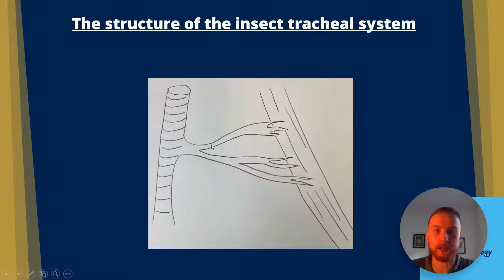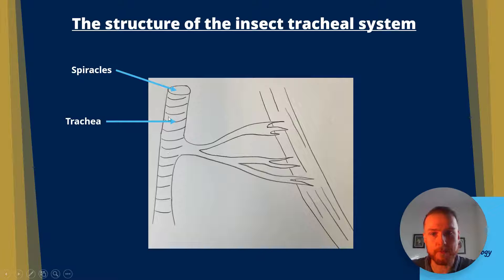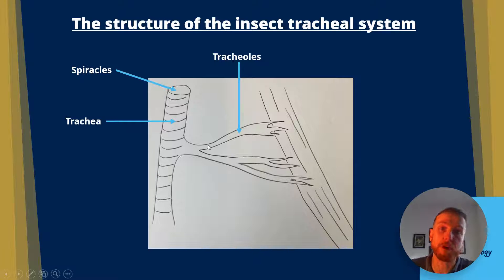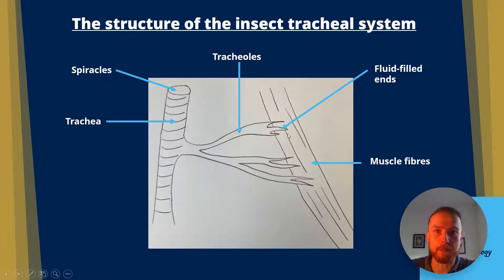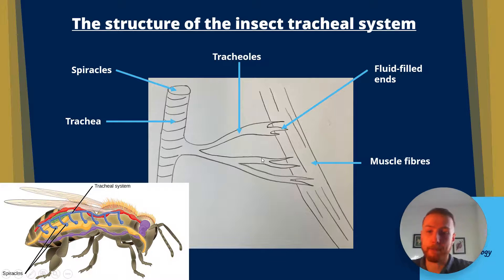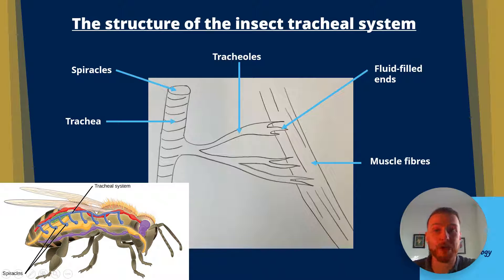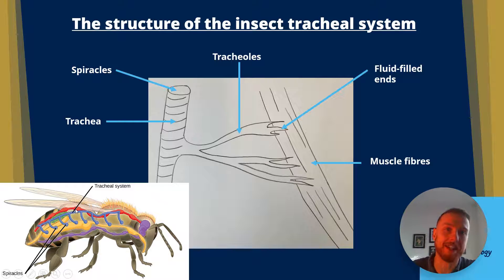So this is the basic structure of the tracheal system. At the top we have the spiracle, which we've just seen on actual insects. We then have the trachea coming off it, and those rings around it represent the chitin, which is the structural protein. They then branch into smaller tracheals, and the fluid-filled ends of those tracheals lead to the muscle fibres where oxygen needs to be delivered and carbon dioxide needs to be removed. Here's another example with a wasp — you can see the spiracles on the side of its body going along trachea to tracheals to fluid-filled ends to deliver oxygen and remove carbon dioxide from the respiring tissues.